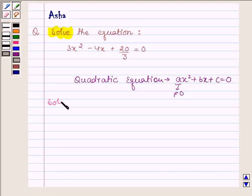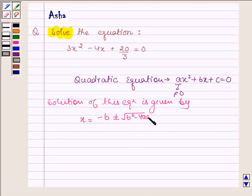The solution of this equation will be x = -b ± √(b² - 4ac) / 2a.